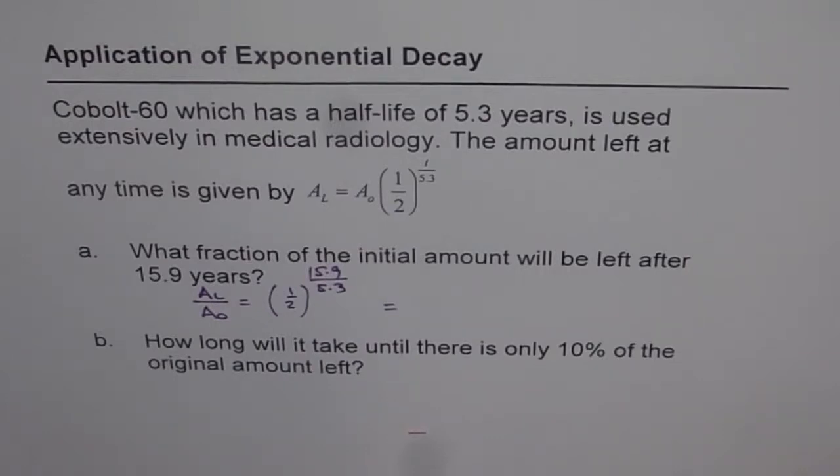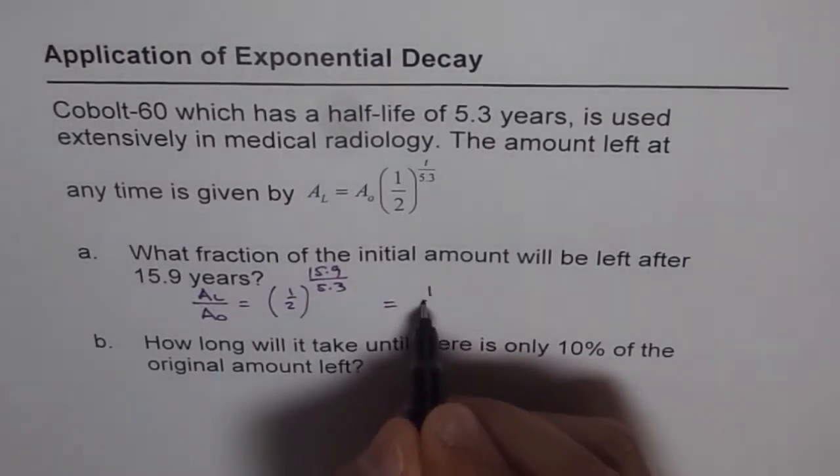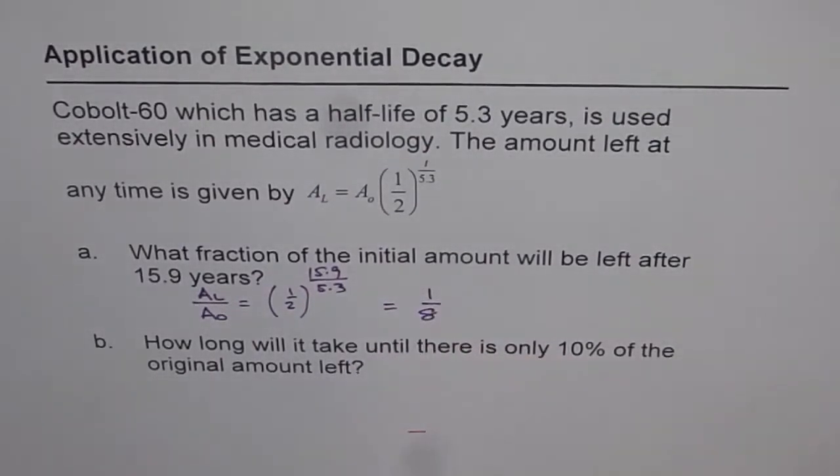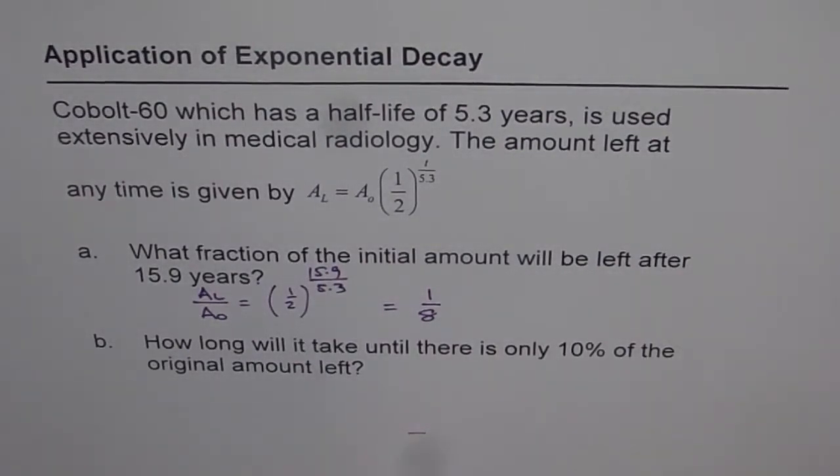So we get 0.5^(15.9/5.3) equals 1/8. Therefore, 1/8 of the initial amount will be left after 15.9 years.